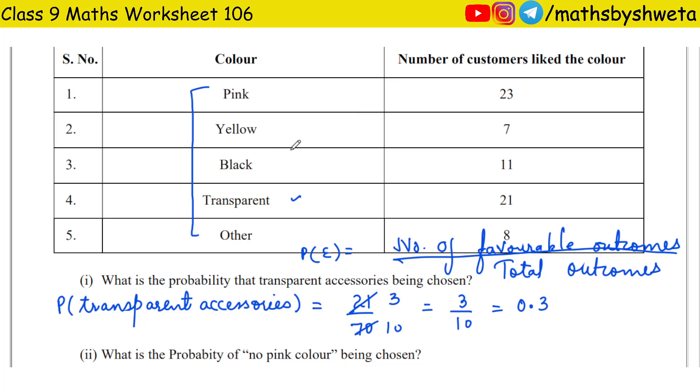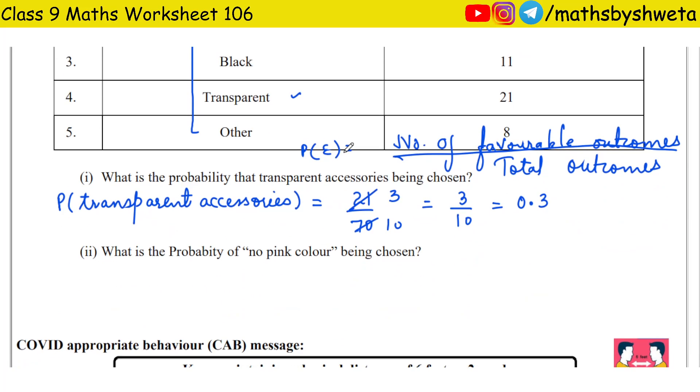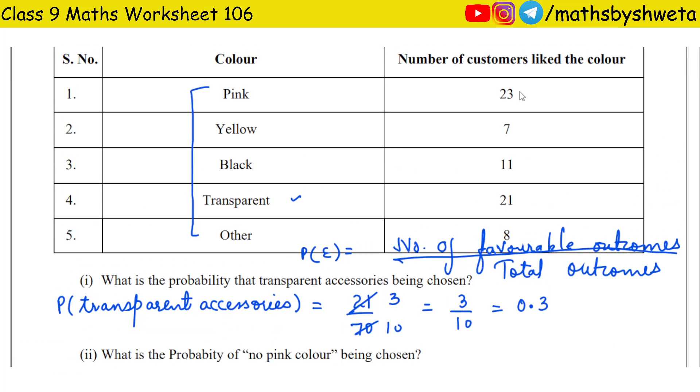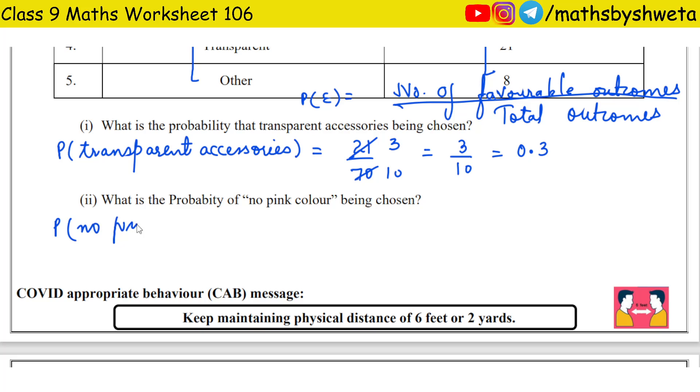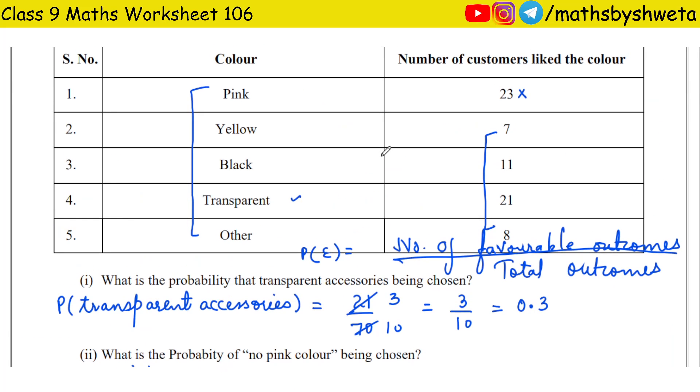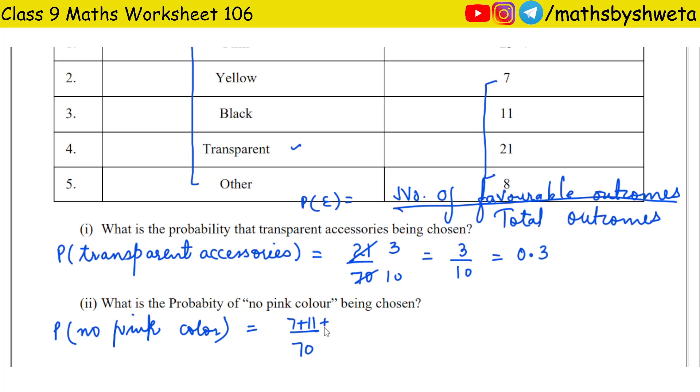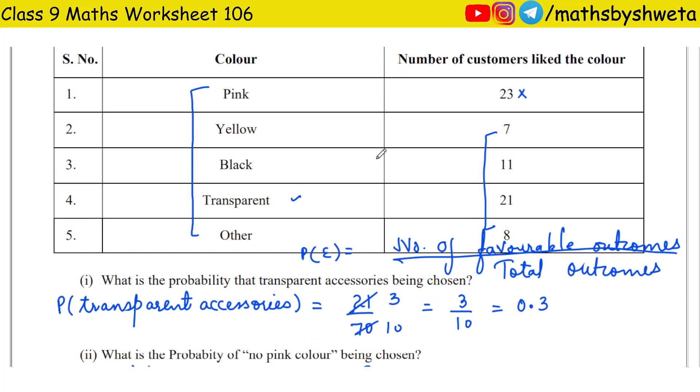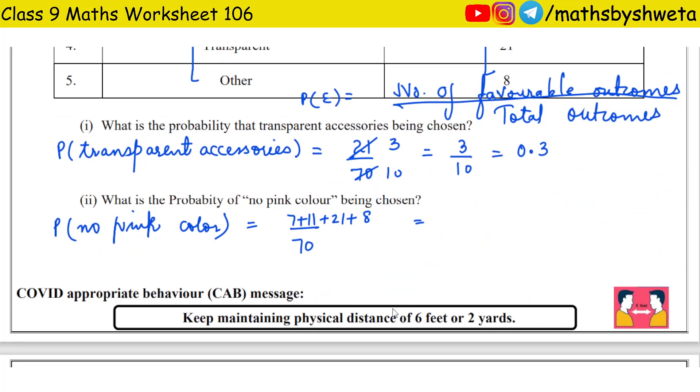What is the probability of no pink color being chosen? Total outcome is 70. Pink color is 23. Without pink color, we have 7 + 11 + 21 + 8 = 47. So the answer is 47/70, which in decimal form is 0.67.